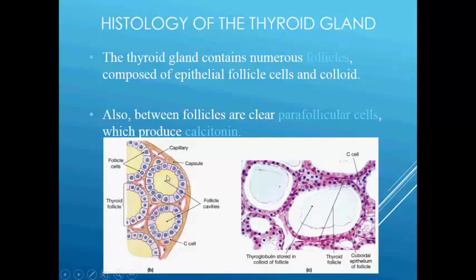There is a cavity present in the center of each follicle. It is filled with a jelly-like, amber-colored colloidal substance called thyroglobulin. The cavity is filled with thyroglobulin, which is secreted by the cuboidal epithelium cells.